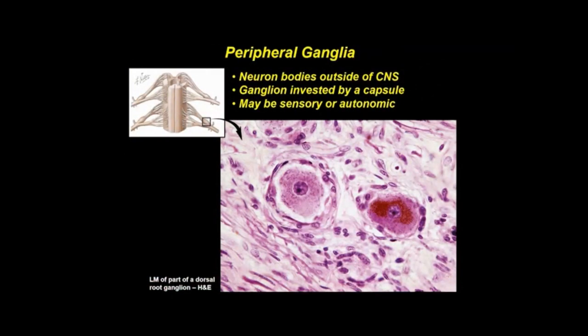Ganglia are discrete aggregations of neuron bodies located outside the CNS and include sensory ganglia of cranial nerves, dorsal root ganglia of spinal nerves, and autonomic ganglia. They are invested by a dense connective tissue capsule continuous with the epineurium and perineurium. Ganglion cells are large and typically contain lipofuscin pigment in their cytoplasm. Surrounding the neurons is a peripheral rim of support cells called satellite cells and a network of nerve fibers.